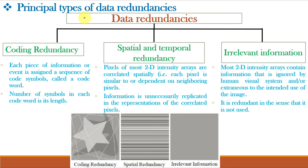The principal types of data redundancies are coding redundancy, spatial and temporal redundancy, and irrelevant information. For coding redundancy, there can be repetitive codes that can be used for compression. For spatial redundancy, repetitive information is present in the image plane itself. For temporal redundancy, the repetitive information is present with time. For irrelevant information, irrelevant repetitive information is present which can be compressed.